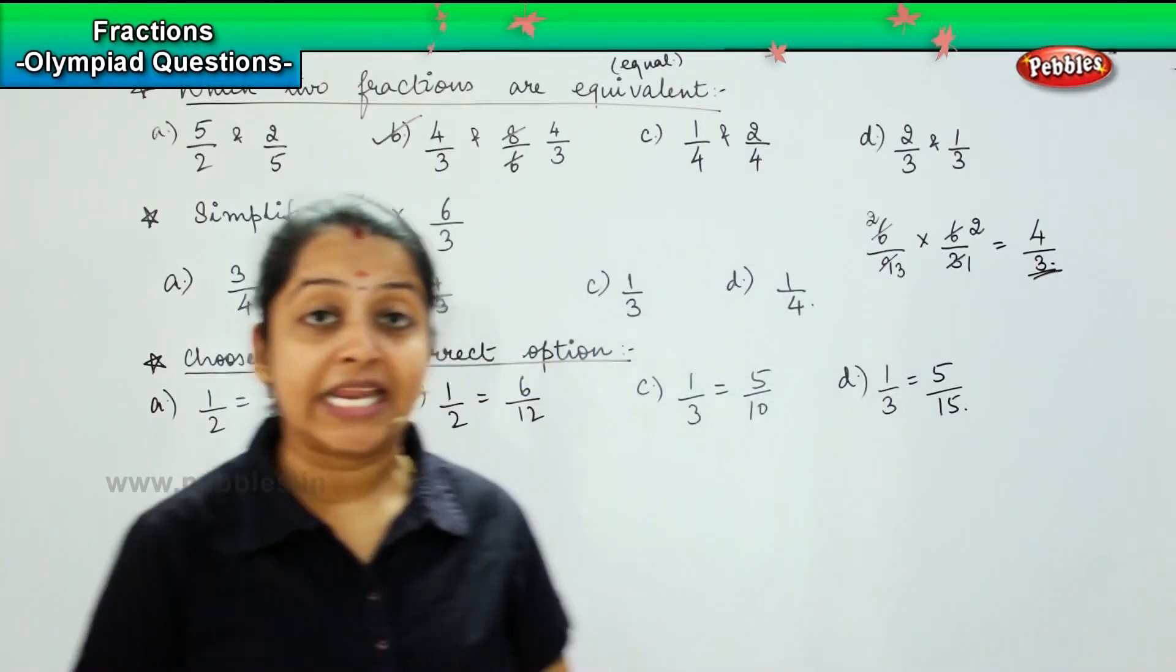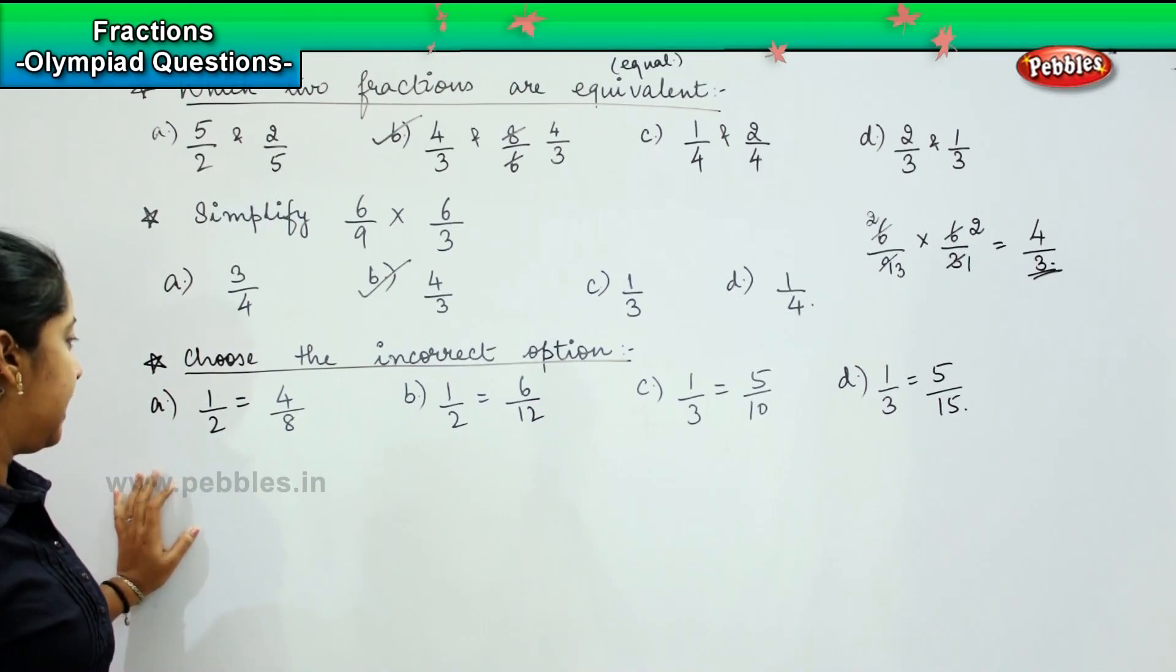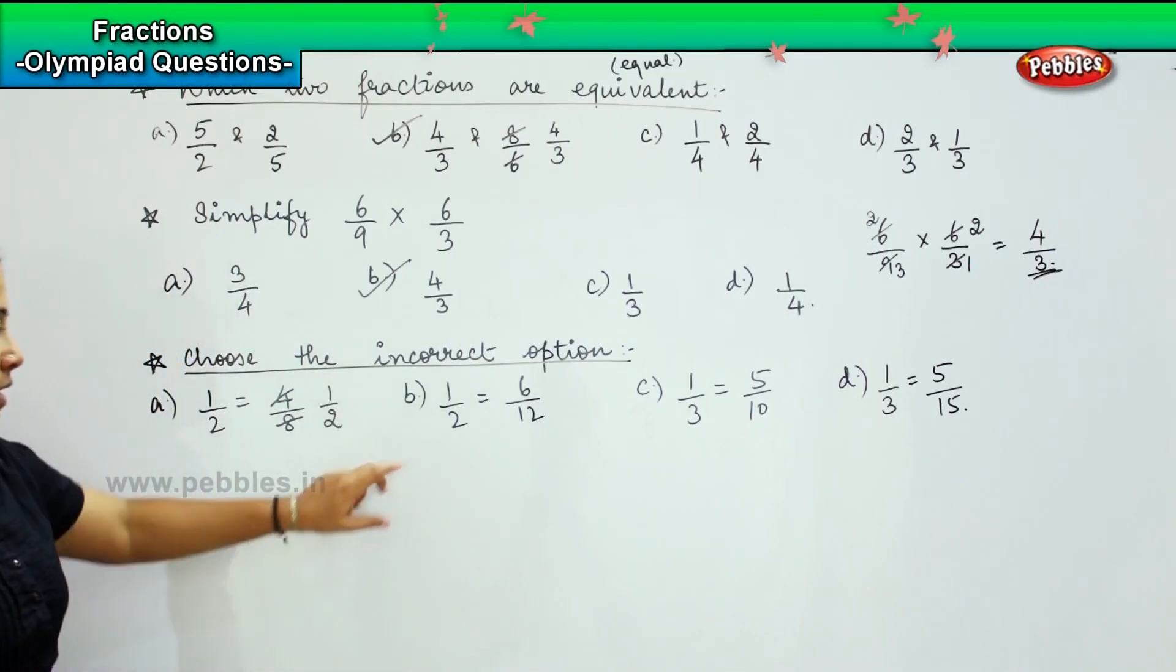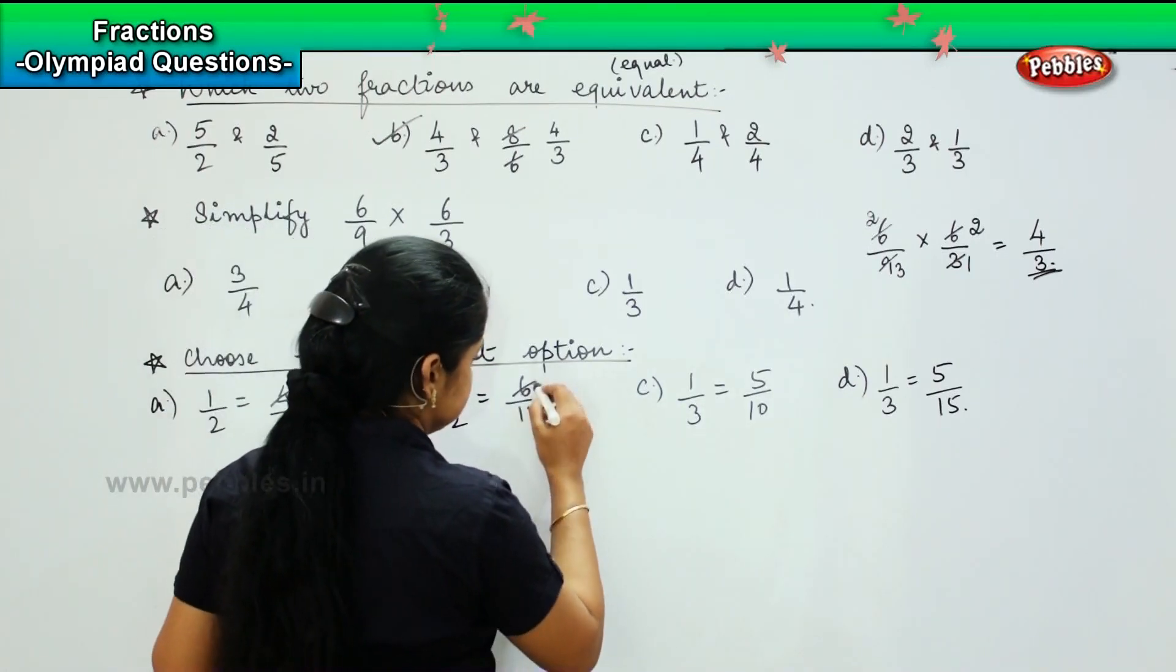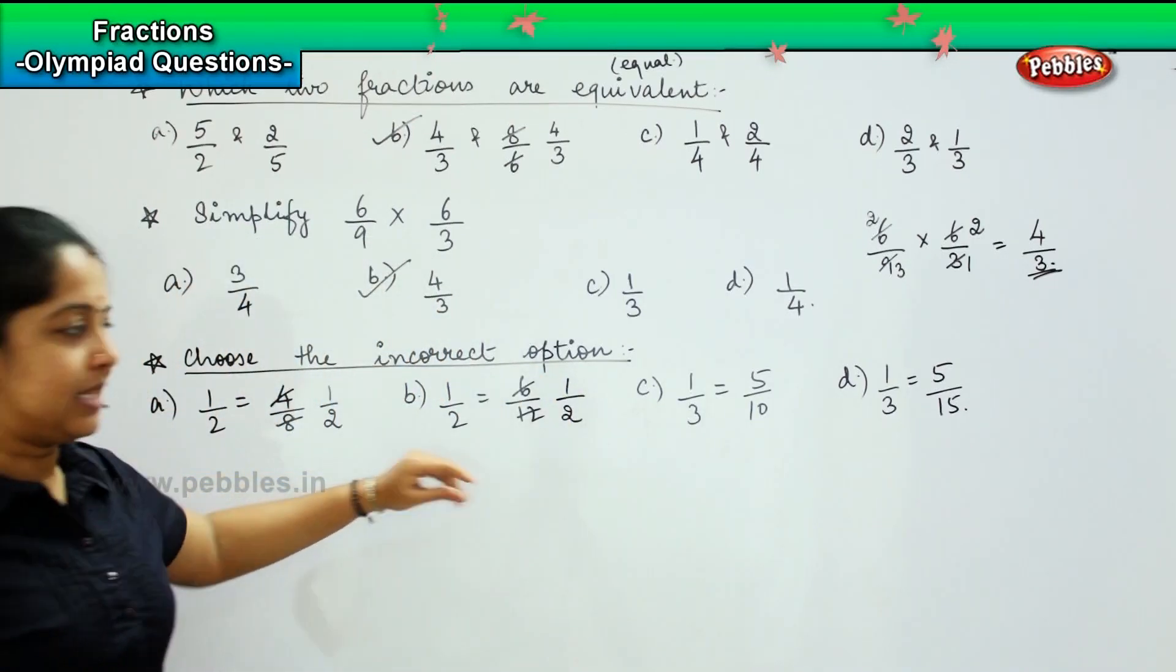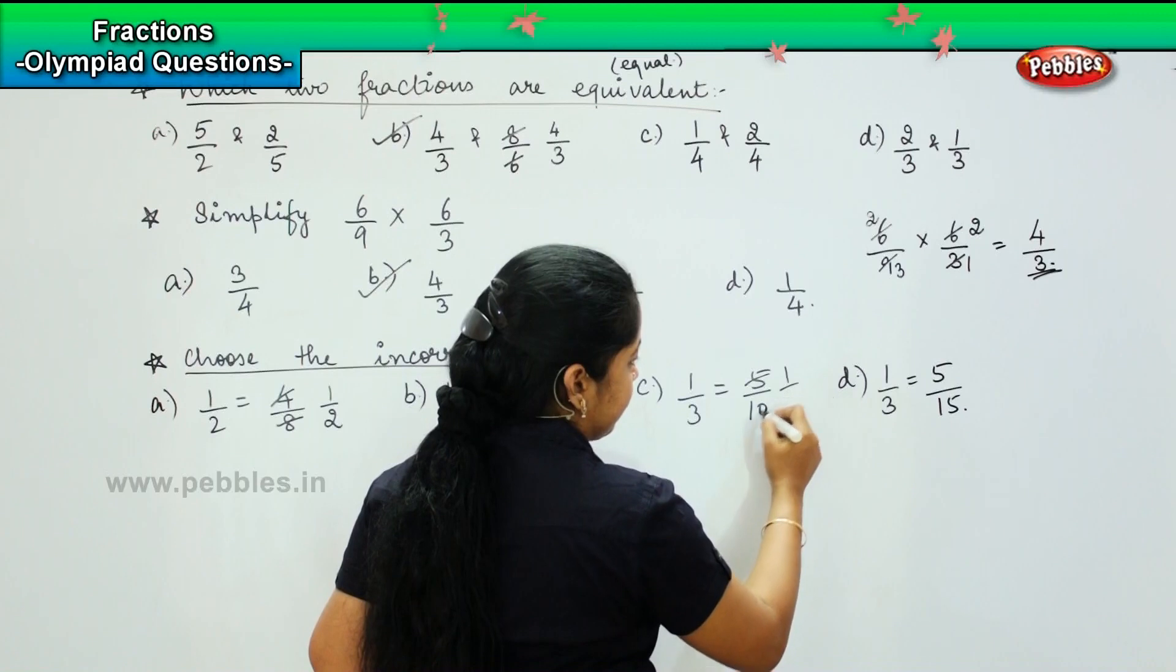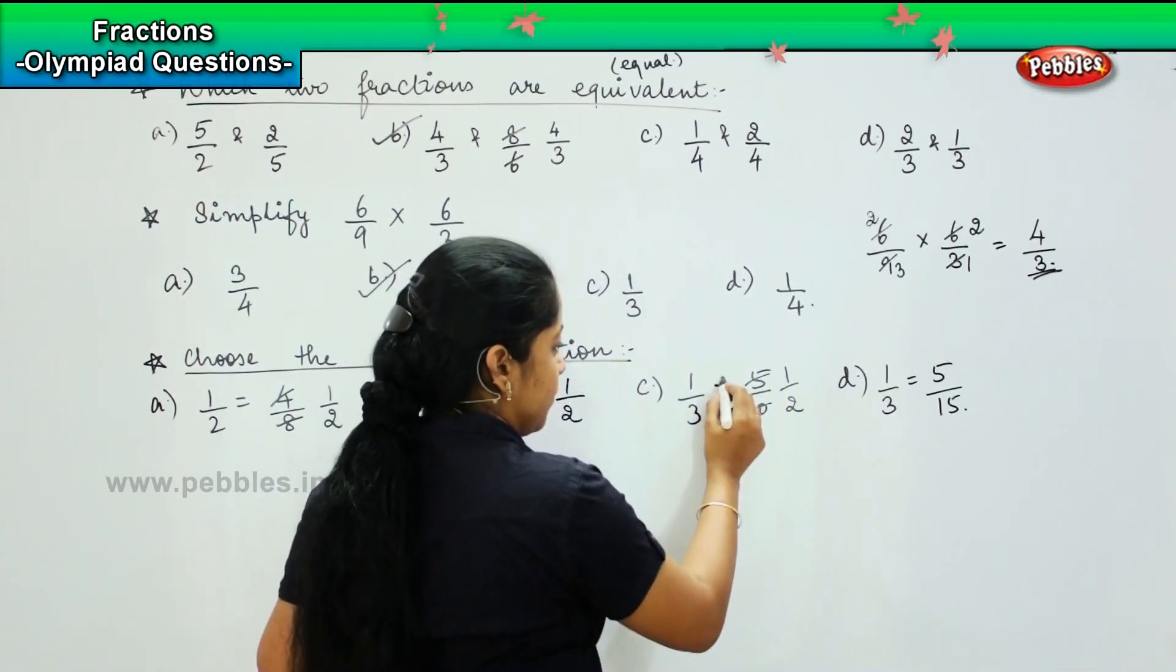You need to choose the incorrect pair. 1/2 equals 4/8? Yes, because if I simplify this it becomes 1/2 again. 1/2 equals 6/12? 6 times 1 is 6, 6 times 2 is 12, yes they are the same. 1/3 equals 5/10? 5 times 1 is 5, 5 times 2 is 10, so 1/3 is not equal to 1/2.